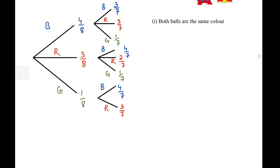First, think about in how many ways can that happen — in how many ways can I satisfy the condition given in the question, which is both balls are the same color? Basically, there are two ways in which this can happen. Whenever you think of 'or' — whenever you think of multiple ways of satisfying the same requirement — what you do is you simply add the probabilities up.